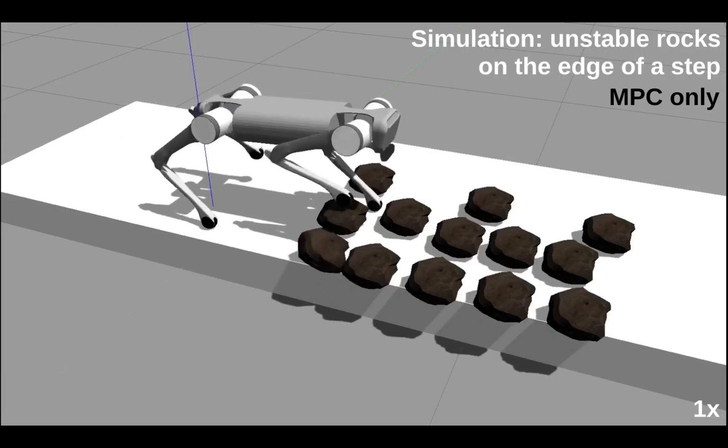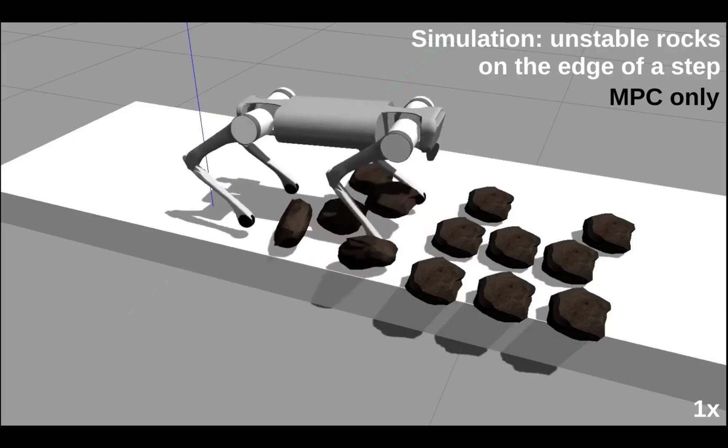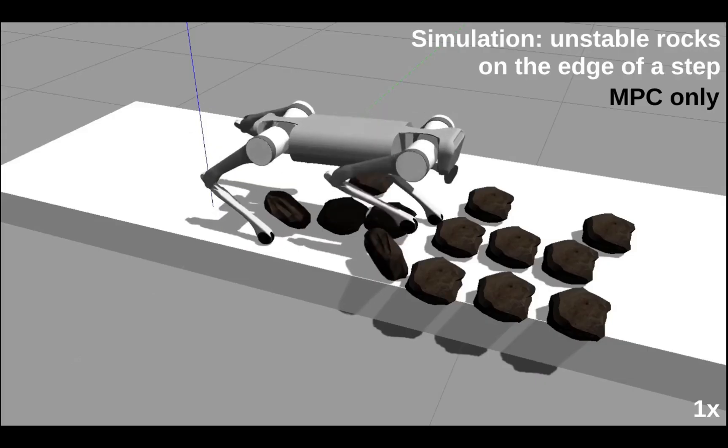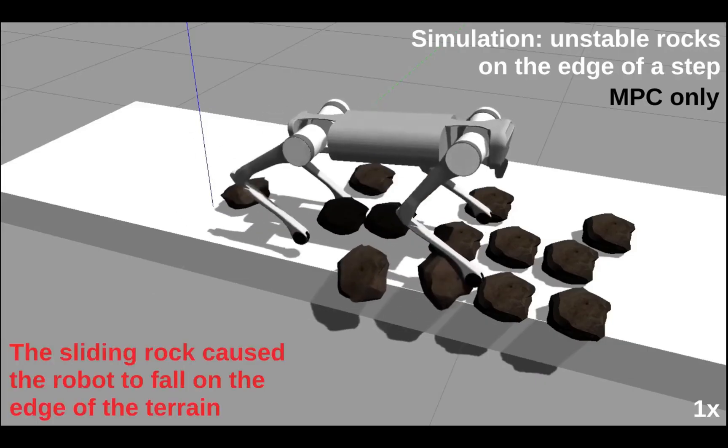The final scenario shows unstable rocks near the edge of elevated terrain. Without probing, the sliding rocks cause the robot to slip down the edge.